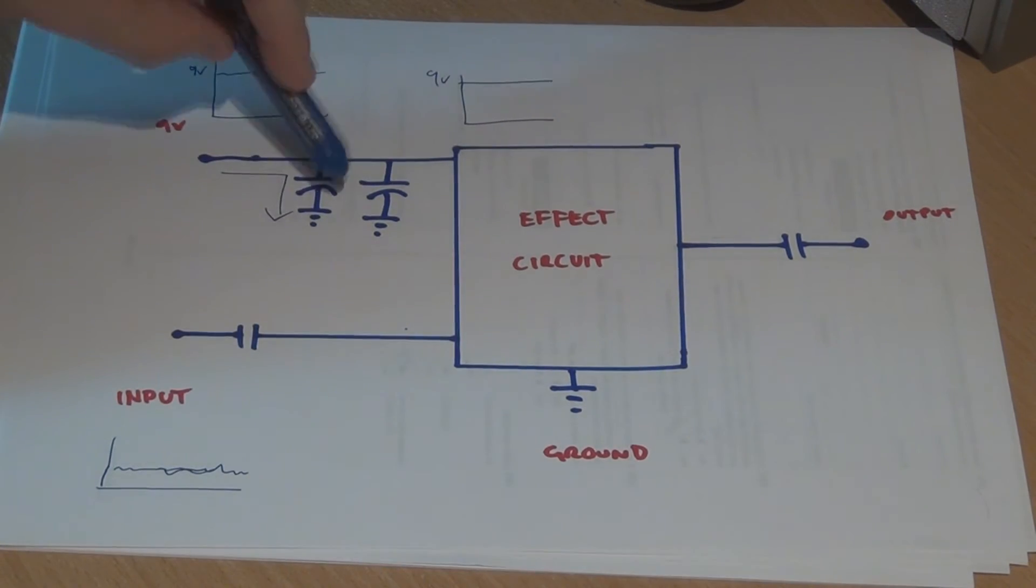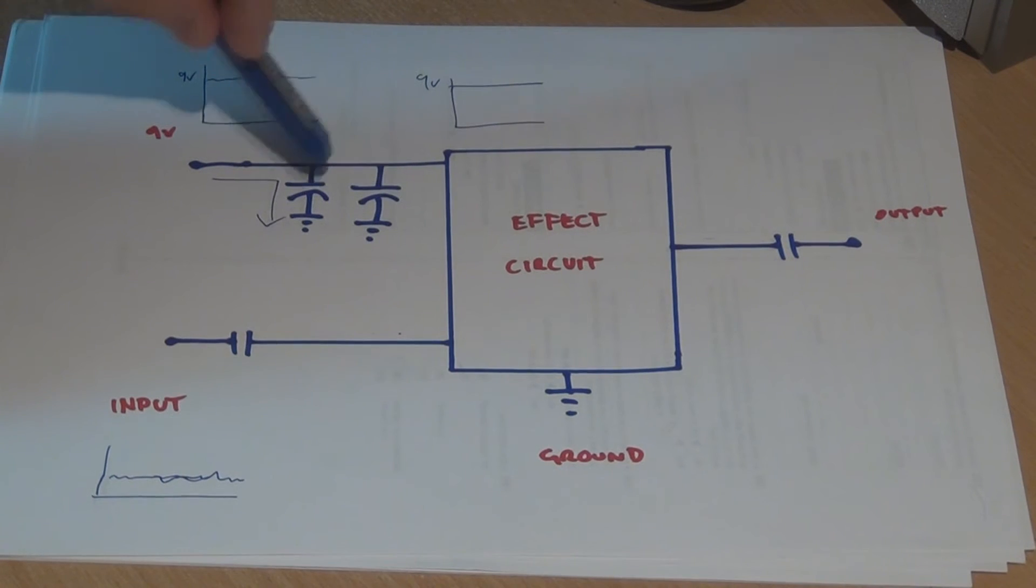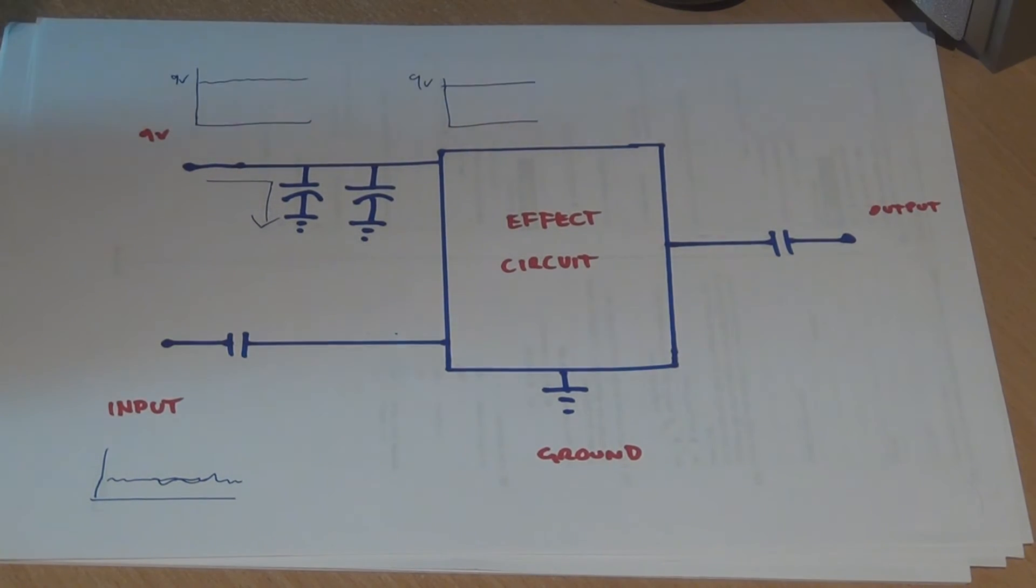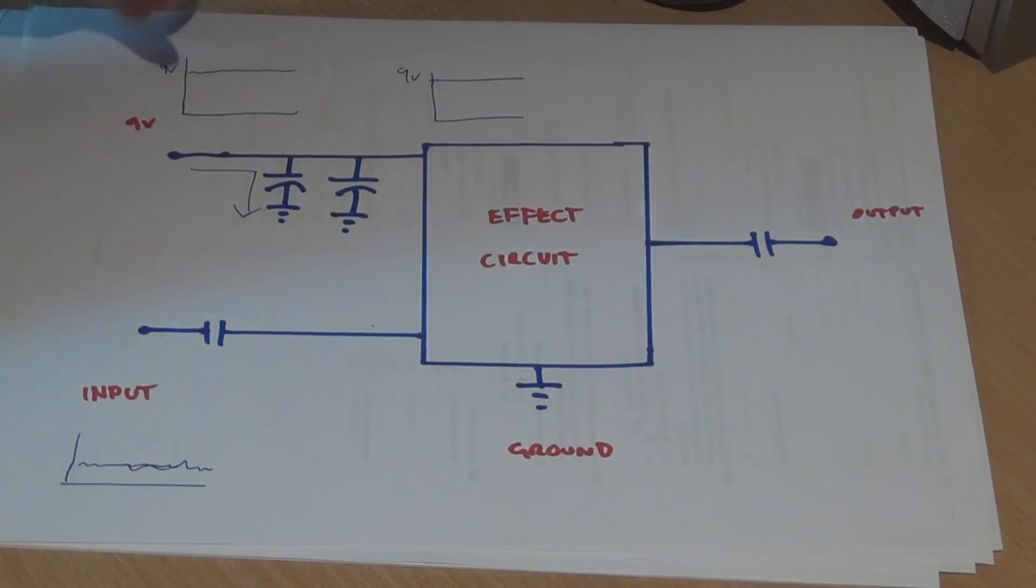So you have to sort of experiment with these values to get rid of this part. It's quite difficult to get rid of the ripple in the unregulated DC voltage.